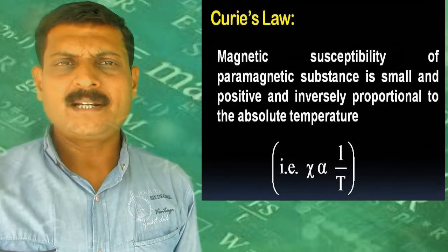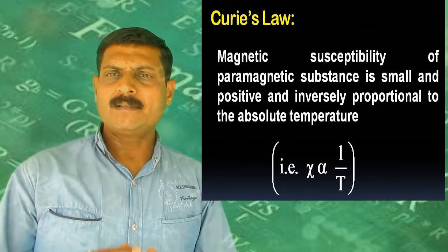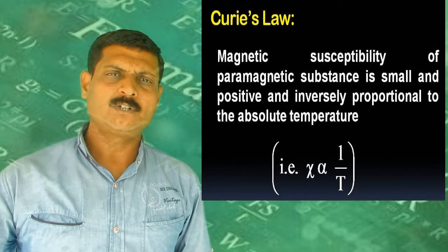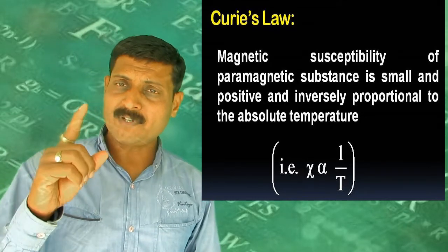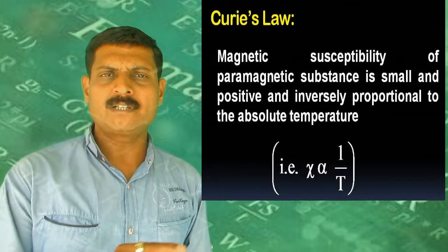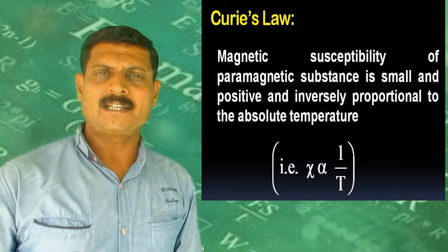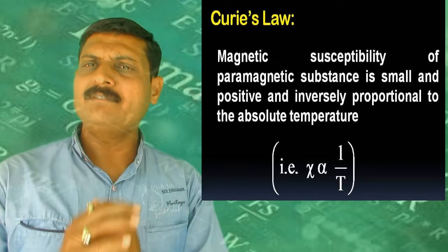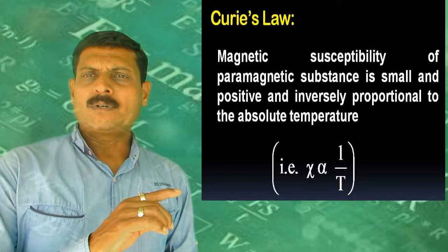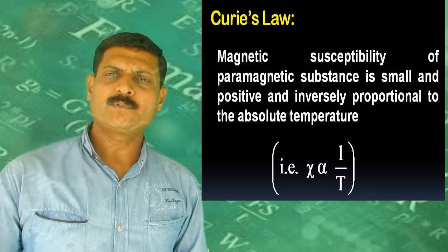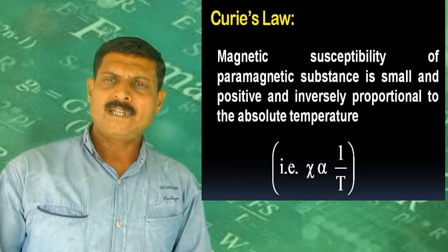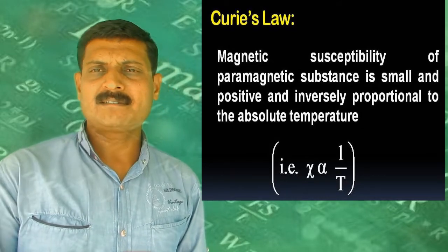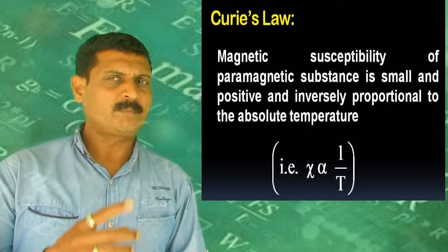Temperature dependence of magnetic susceptibility: for paramagnetic substances, magnetic susceptibility is inversely proportional to temperature — this is Curie's law: χ = CB/T, where C is the Curie constant, B is the external magnetic field, and T is the absolute temperature (Kelvin). As temperature increases, magnetic susceptibility decreases.